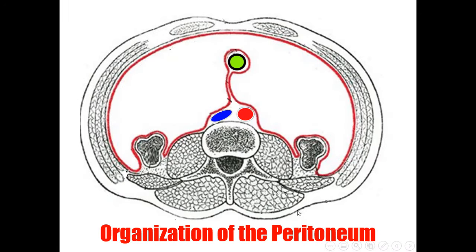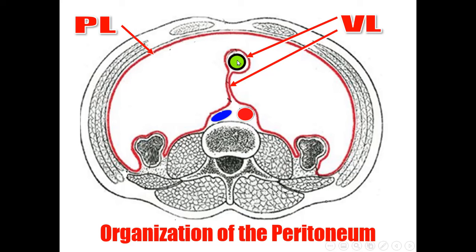Regarding the organization, it is organized into two layers: a parietal layer lining the abdominal wall — anterior and posterior abdominal wall — and the visceral layer surrounding the viscera, forming folds which suspend the organ from the posterior abdominal wall. The space between the parietal layer and the visceral layer is the peritoneal cavity.